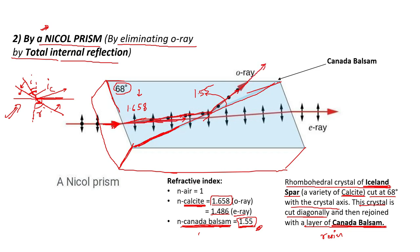The extraordinary ray will have a refractive index of 1.486. As it comes to the Canada Balsam, it will encounter a refractive index of 1.55. This means the extraordinary ray is traveling from a rarer medium to a denser medium. If light passes from a rarer medium to a denser medium, no total internal reflection can take place. So the extraordinary ray is simply refracted and exits the Nicol Prism from the upper surface and goes to the thin section.